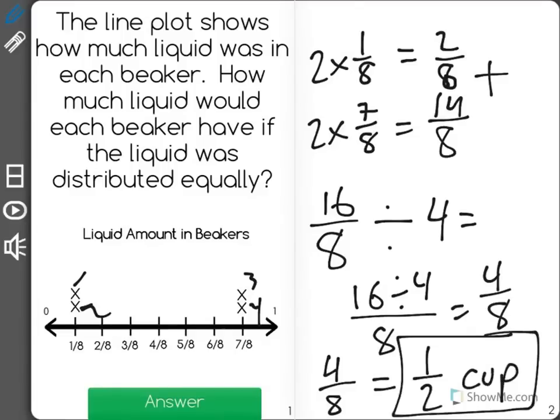So if we distributed the liquid out evenly, each beaker would get 1 half of a cup.